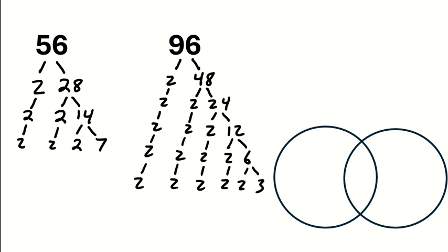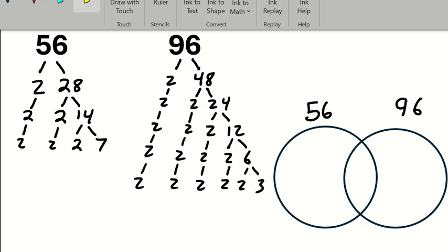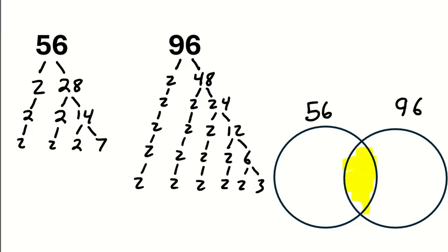Now, you'll remember that we can use the Venn diagram by designating this left circle as 56 and this right circle as 96. And the only thing we really care about is what they have in common. So, let's look at their prime factors and determine what they have in common.